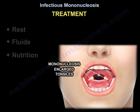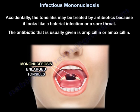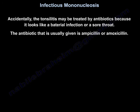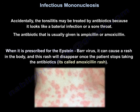Treatment is rest, fluids, and nutrition. The tonsillitis may accidentally be treated with antibiotics because it resembles a bacterial sore throat, and the antibiotic usually given is ampicillin or amoxicillin. When prescribed for Epstein-Barr virus, it can cause a rash — called amoxicillin rash — which disappears when the antibiotics are stopped.